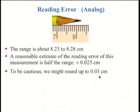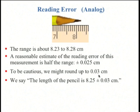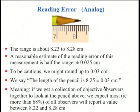Let's just be cautious and round it up to 0.03. So we would say the length of the pencil is 8.25, my original estimate, plus or minus 0.03. Meaning that if we were to somehow get a whole collection of objective observers, not me, but lots of people with rulers, and they all went out to measure this pencil, we would expect that most of them would have a value somewhere between 8.25 minus 0.03, so 8.22, and 8.25 plus 0.03.